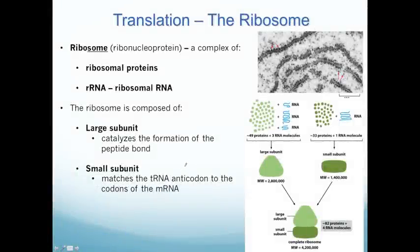I'm going to start with translation with the ribosome. The ribosome is a ribonucleoprotein, which means it's a complex of proteins and a special form of RNA called ribosomal RNA or rRNA. Remember, there were four types of RNA we talked about: mRNA, messenger RNA, transfer RNA, ribosomal RNA, and microRNA or small interfering RNAs. Ribosomal RNA is a structural and catalytic form of RNA that makes up part of the overall ribosome.